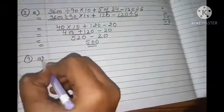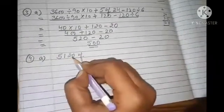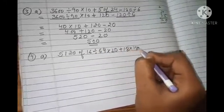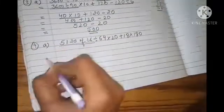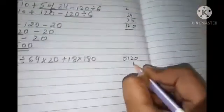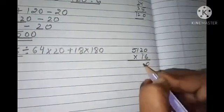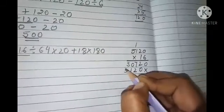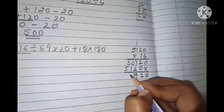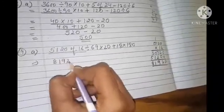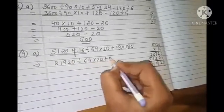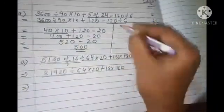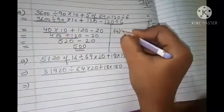Now let's do question number 4 ka part a, which is 5120 of 16 divided by 64 multiply by 20 plus 18 multiply by 180. So first we will use OFF operation. We have to multiply 5,120 with 16.